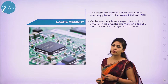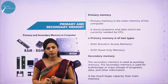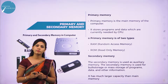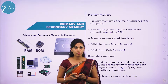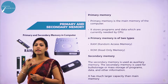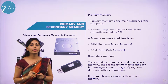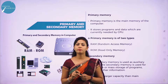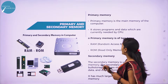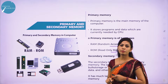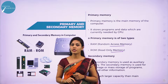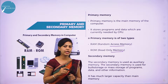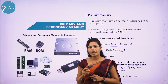Primary memory is computer memory that a processor or computer accesses directly. Accessing data from primary memory is faster because it is internal memory of the computer. Primary memory is faster compared to secondary memory, and the computer can't run without it. Primary memory consists of RAM and ROM. Secondary memory is where programs and data are kept on a long-term basis — examples include hard disk, floppy disk, magnetic disk, and flash drives.